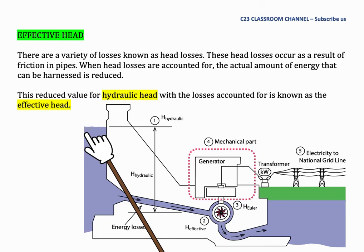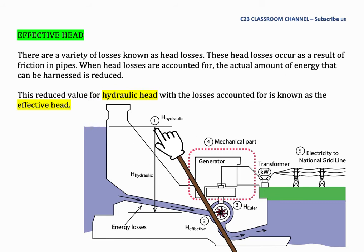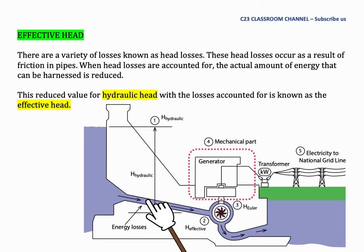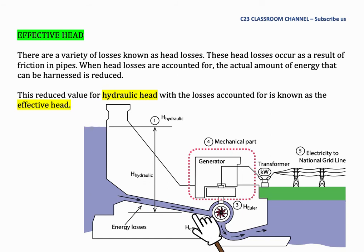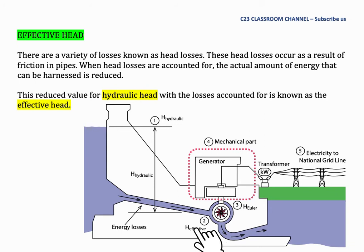Again, from this diagram, we can understand that water from the dam will have potential energy by its height, and then this water will flow to the Francis turbine in a pipe system. As we learned previously, in a pipe system like this, there are losses due to friction. We need to deduct the hydraulic head with the energy losses along the pipe.